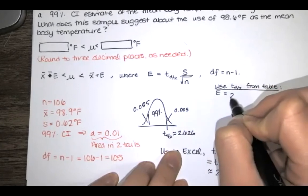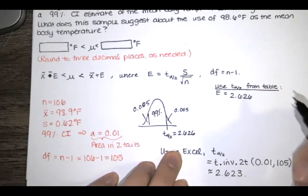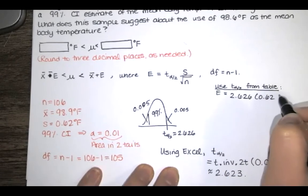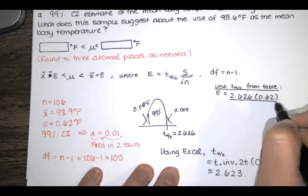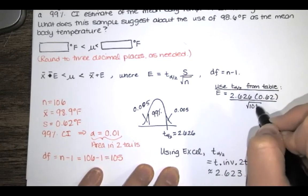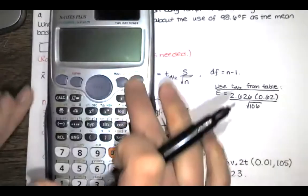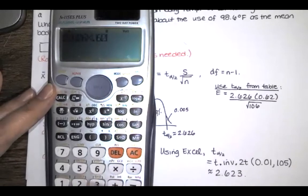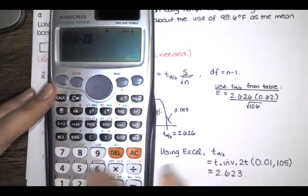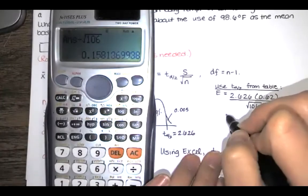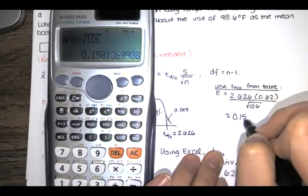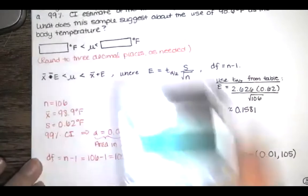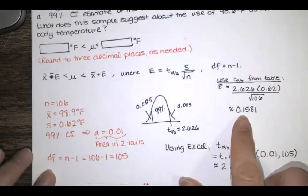The error in that case is 2.626 times the sample standard deviation, which is 0.62°F, divided by the square root of 106. So we get 2.626 times 0.62 divided by the square root of the sample size, and that's approximately equal to 0.158, or 0.1581 to four decimal places. So that's our error.